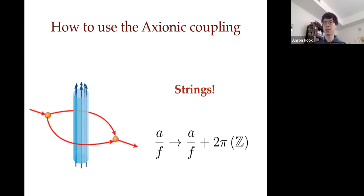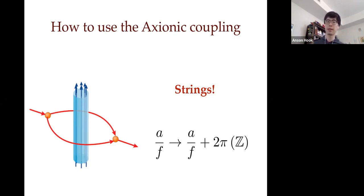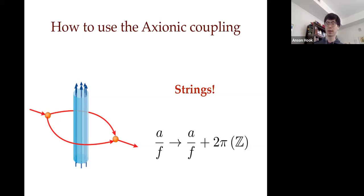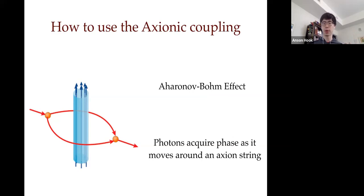You have an axion that couples to photons — can we do something Aharonov-Bohm-like? You need to replace the magnetic flux with something. The axion field A is very much like an angle, and there exist strings around which this angle goes from zero to two pi. So axion strings exist, and if you take a photon and go around such a string, the photon acquires a phase. There is therefore a direct analog of the Aharonov-Bohm effect where magnetic flux is replaced by an axion string and the electron is replaced by a photon.